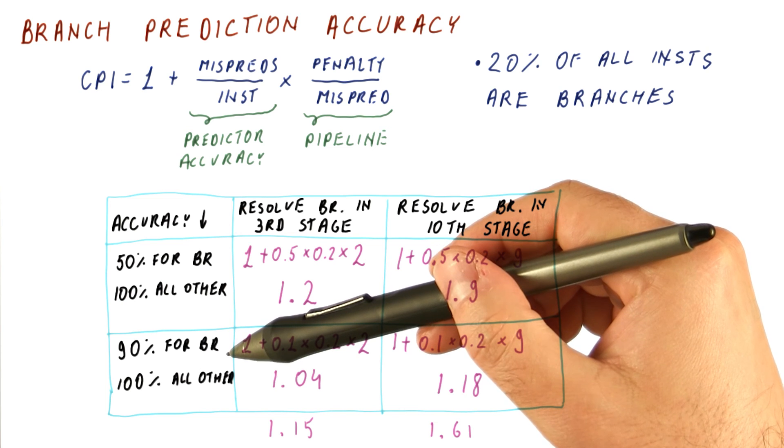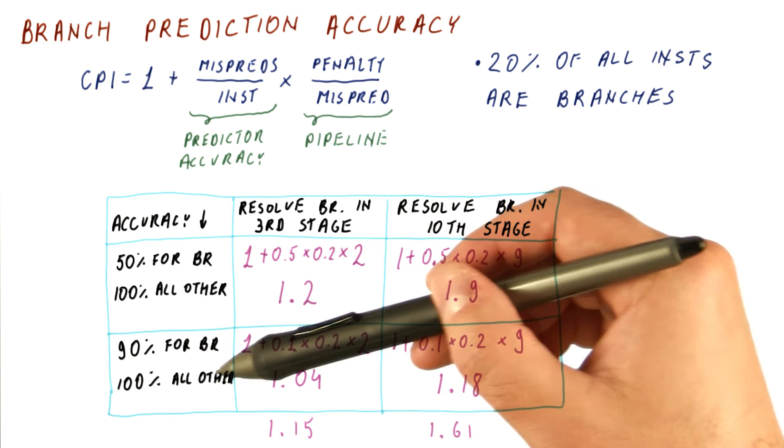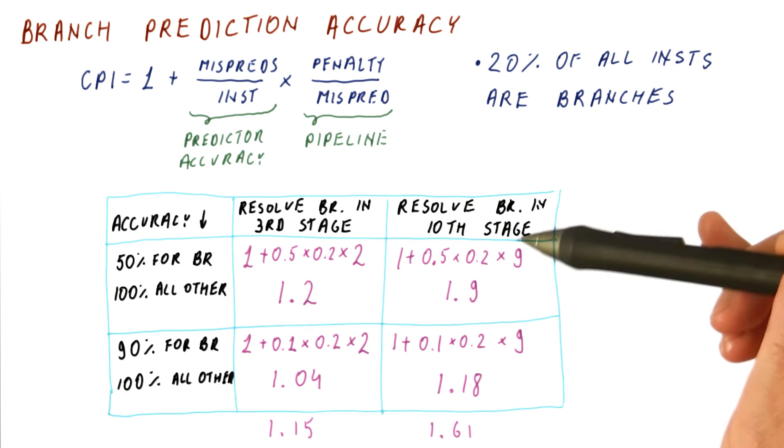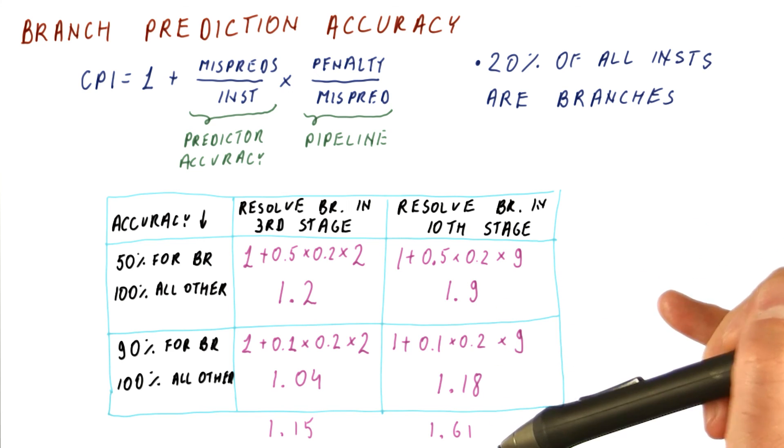Although our predictors are now pretty good, they are significantly better than 90% accurate for branches. However, our pipelines are deep, so we still benefit from further improvements.